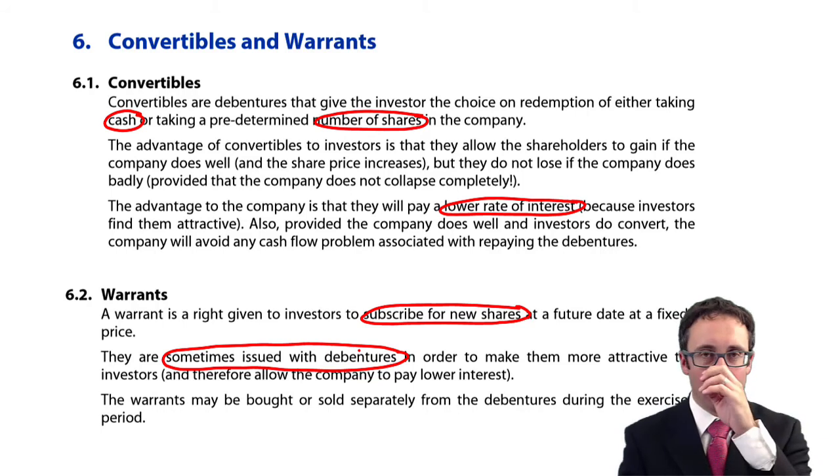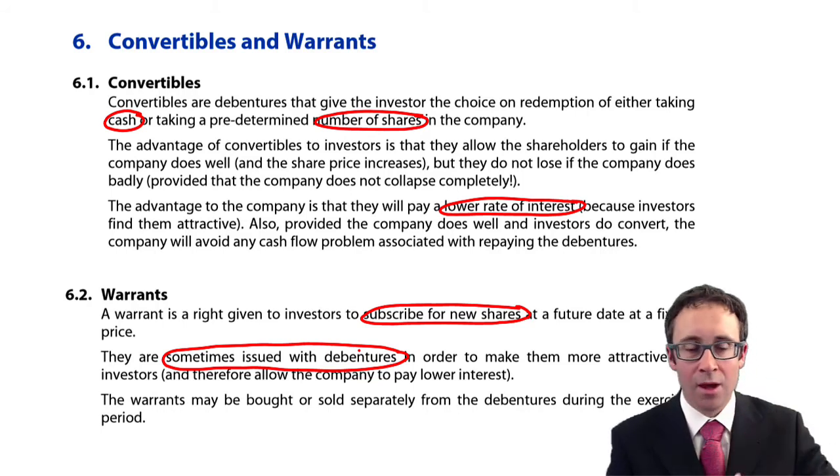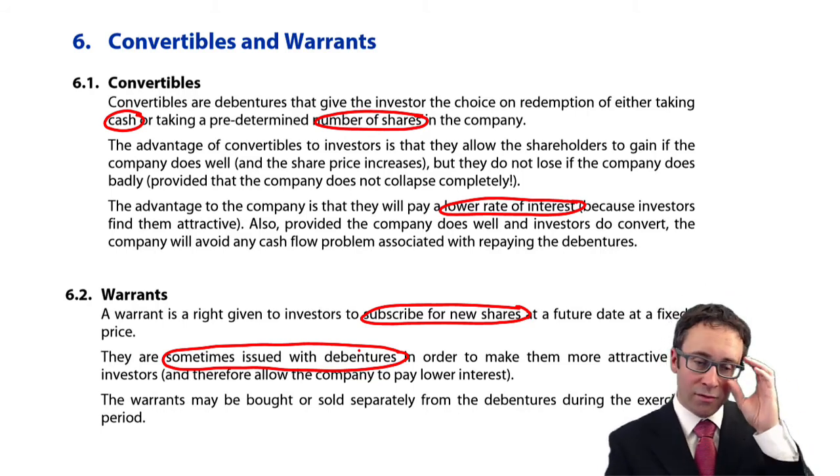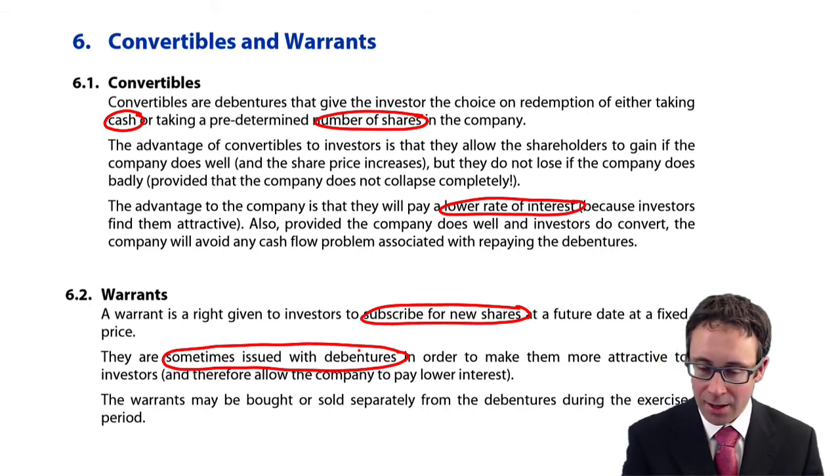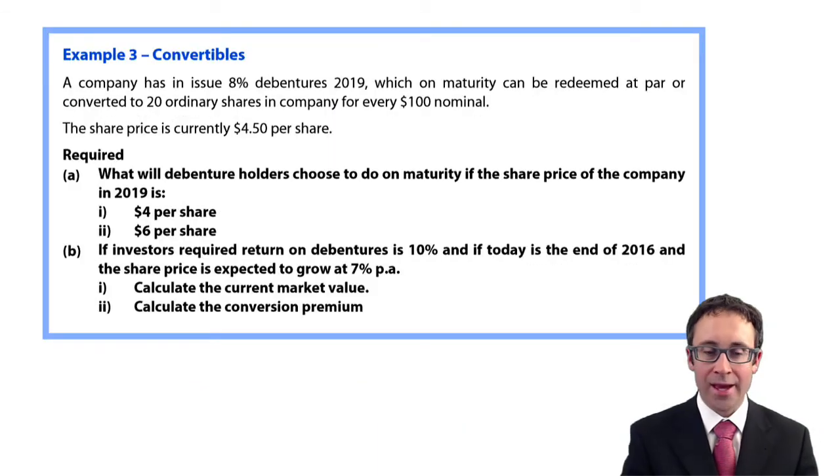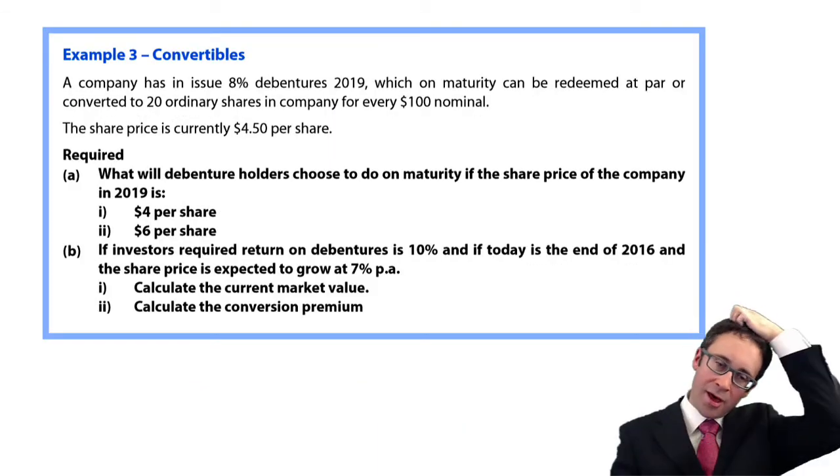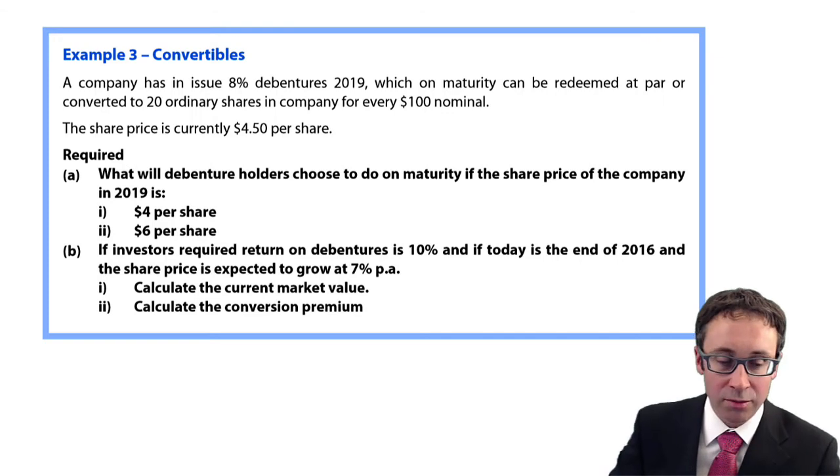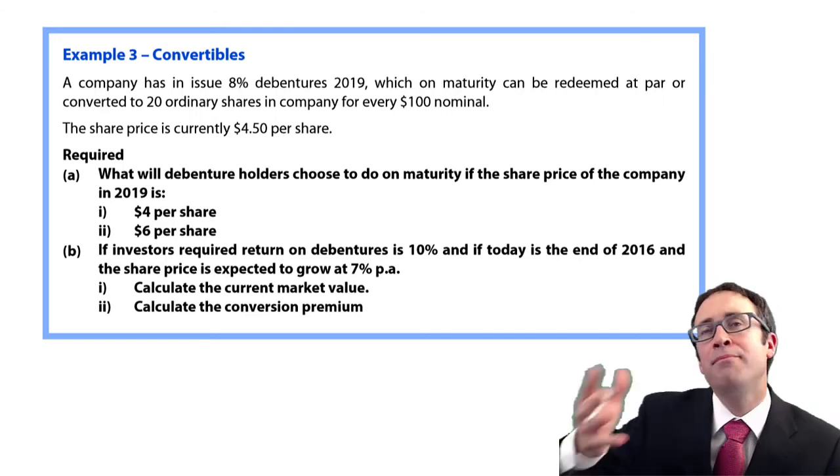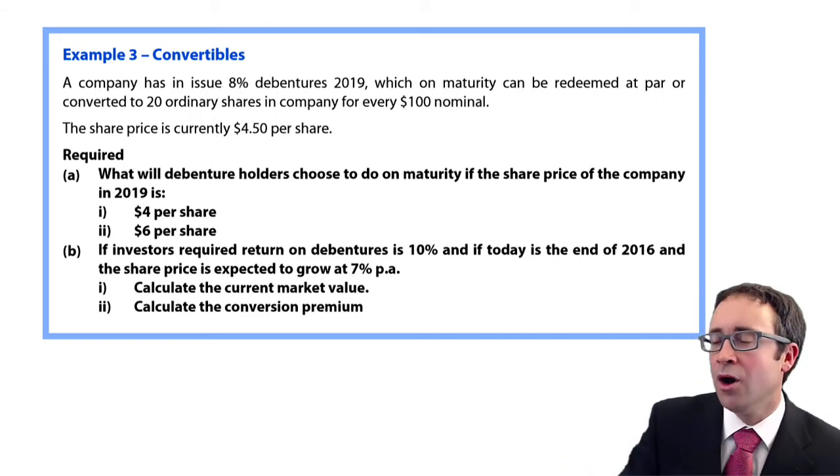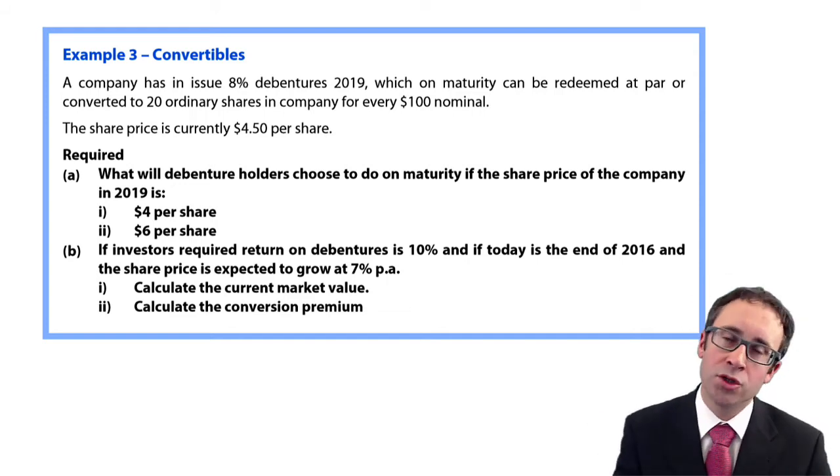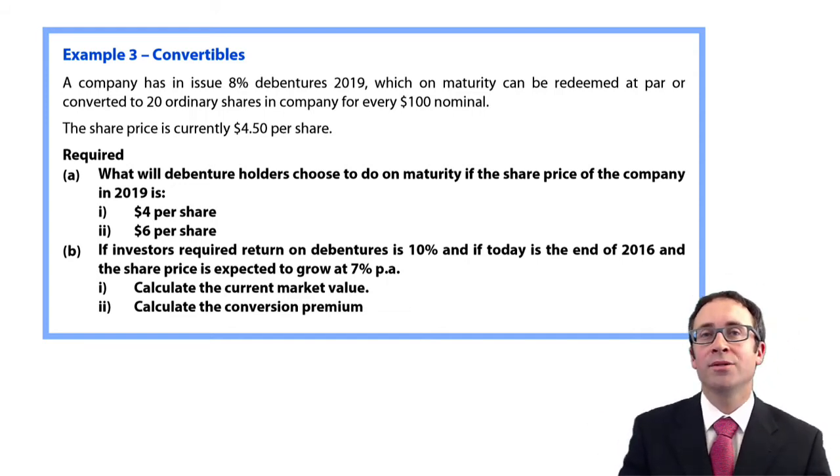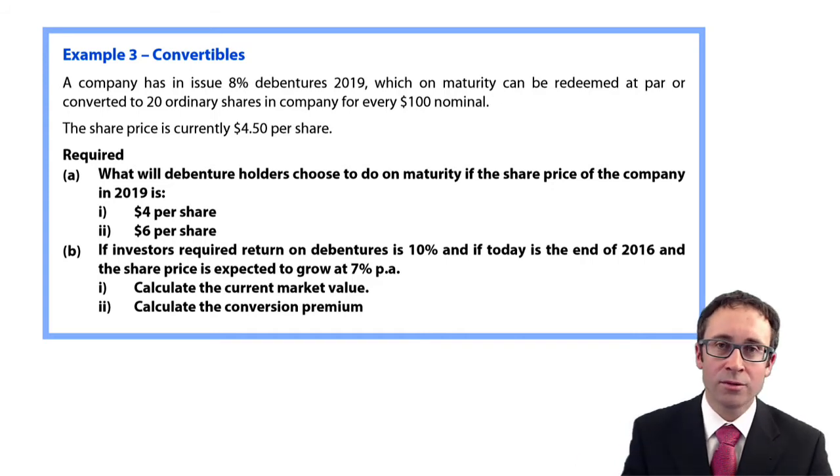It's really important that you understand the difference between them. The focus most of the time is going to be on convertibles, because that is whereby you can bring in the numbers as well, which is what we see on the example entitled convertibles. Because it brings in what we saw earlier in terms of your gross redemption yield, your yield to maturity and working that out as the IRR of the cash flows.